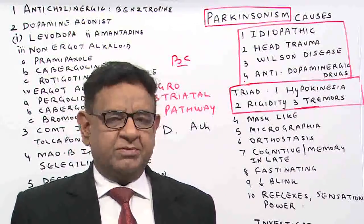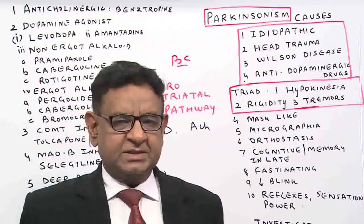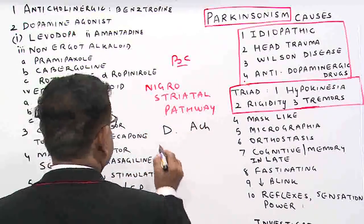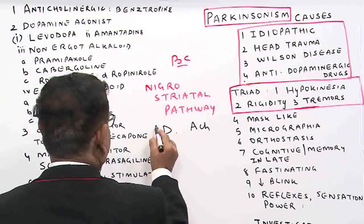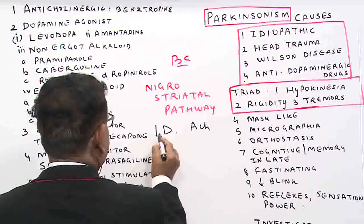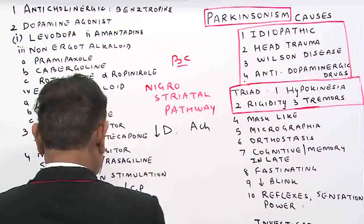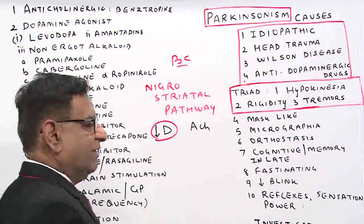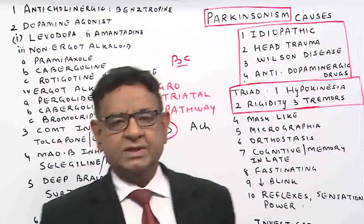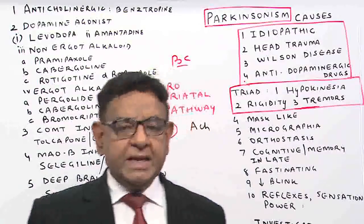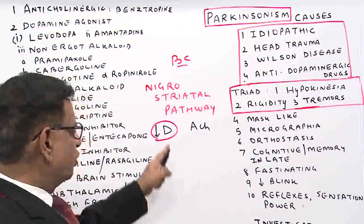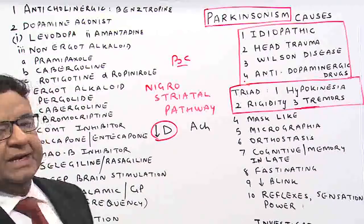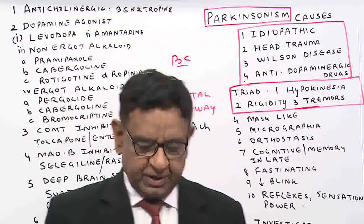The basic concept of Parkinson disease is that in Parkinson, dopamine level goes down. As the dopamine level goes down, there is an imbalance between dopamine and acetylcholine.